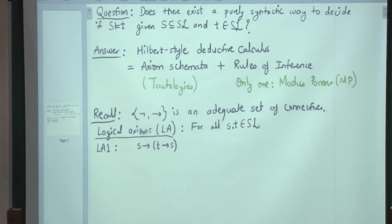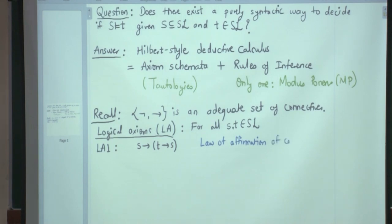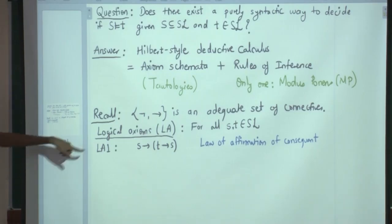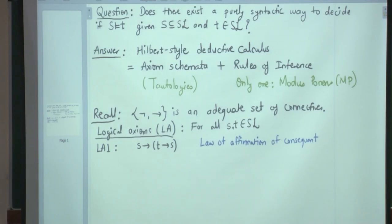This is an axiom scheme, not just a single axiom. S and T are any arbitrary formulas. This is called the law of affirmation of consequent. Affirmation of the consequent: the consequent here is S, and T is arbitrary. In formal proofs, this particular axiom is very useful because it allows you to introduce any arbitrary T.